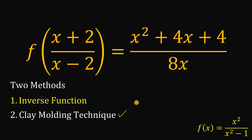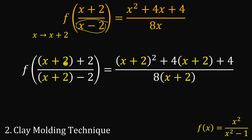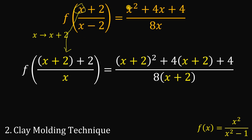Now using the clay molding technique — with just three moldings we get the same answer. First molding: replace all x with x+2. The reason is that in the denominator (x-2), substituting x+2 gives (x+2)-2 = x, so the denominator becomes simply x. All instances of the variable x become x+2 throughout the equation. This is how the molding technique works.